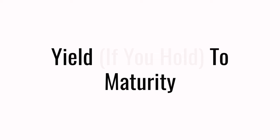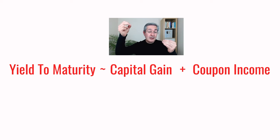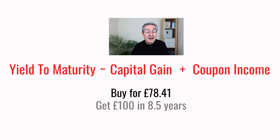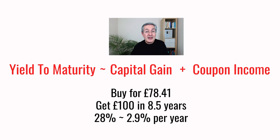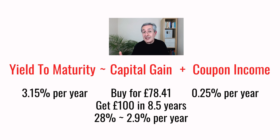Yield to maturity is short for yield if you hold to maturity. Roughly, it's the sum of two things: the capital gain or loss on the bond — if you buy below 100 you get a capital gain, if above 100 you get a capital loss — plus the coupon income, which is always positive. For the bond we just saw, bought at £78.41, in eight and a half years it matures at £100, giving a percentage gain of 28%, which annualised over that period is 2.9% per year. Adding the 0.25% coupon income gives a yield to maturity of approximately 3.15%.